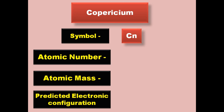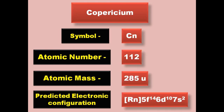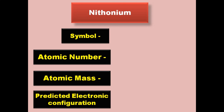Copernicium has symbol Cn, atomic number 112, atomic mass 285, predicted electronic configuration [Rn] 5f14 6d10 7s2. Copernicium is a transition metal and is expected to be solid at room temperature.